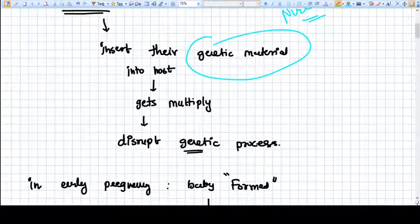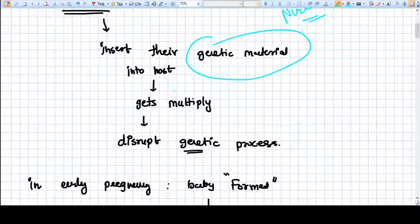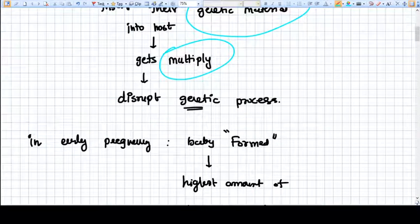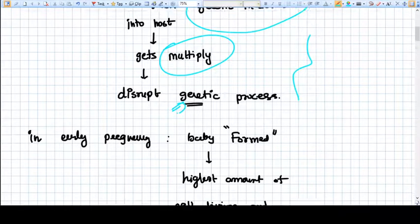They insert their genetic material into the host genetic material, and then it gets multiplied. So they basically disrupt the genetic process. This is how a virus works.